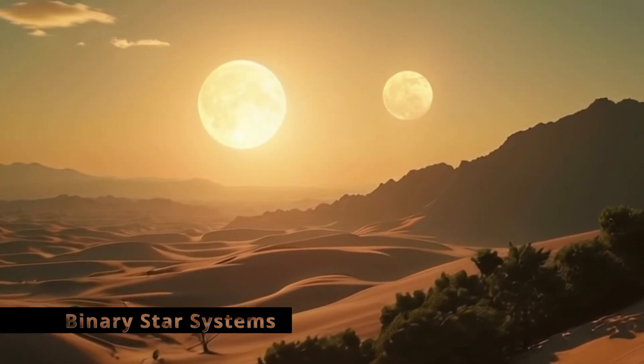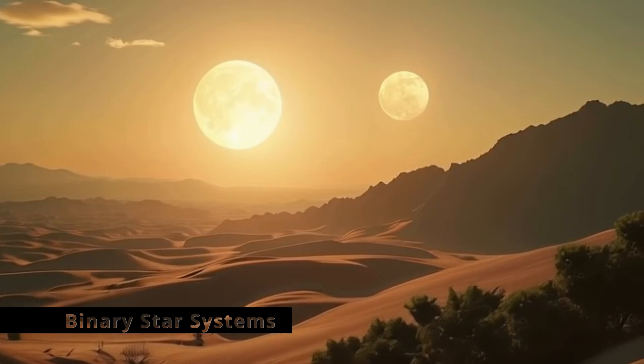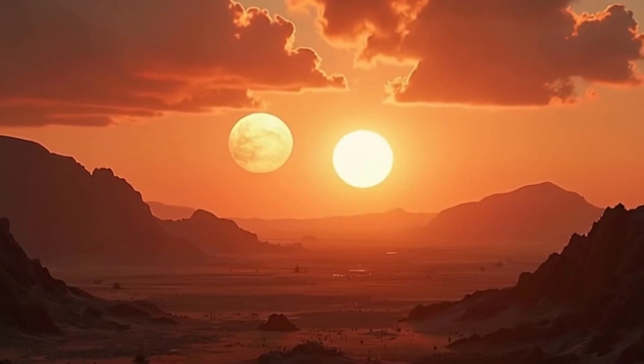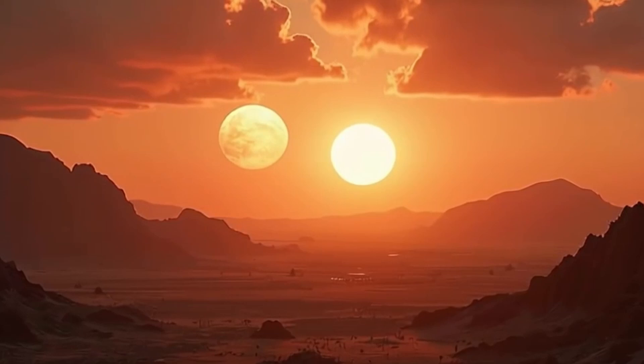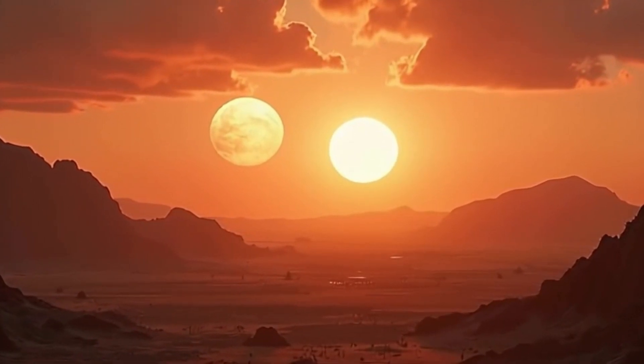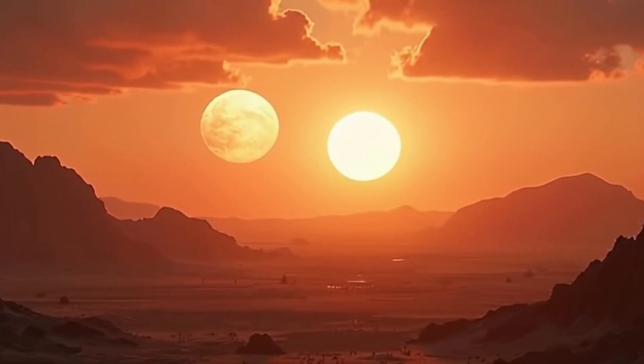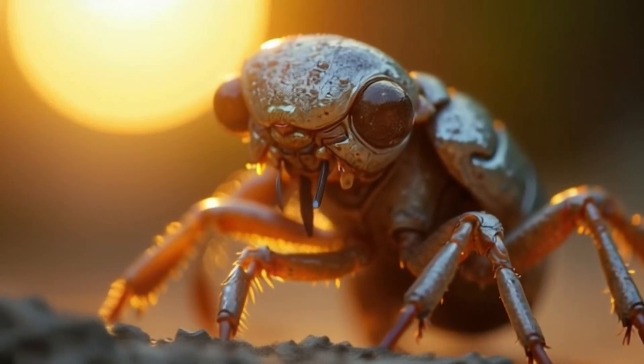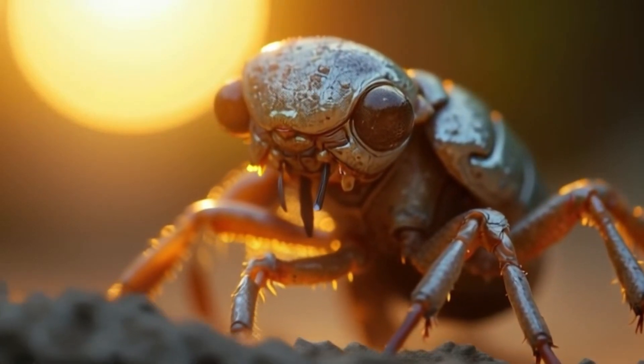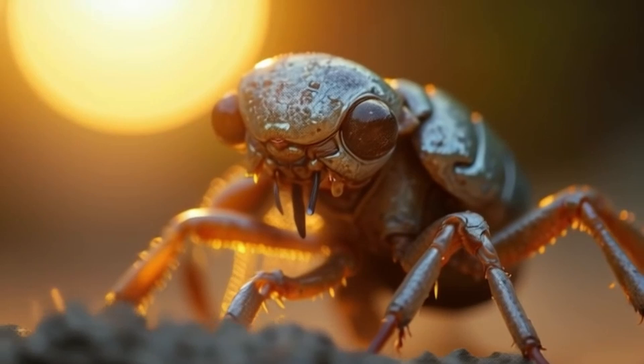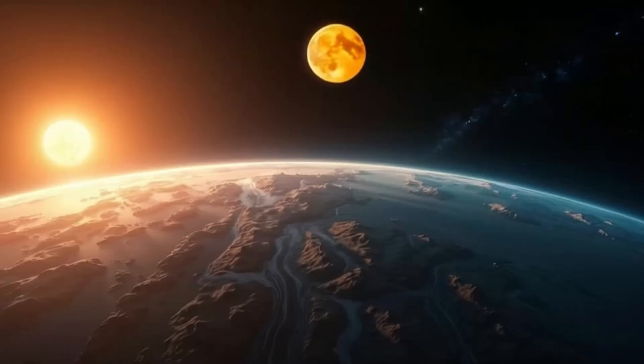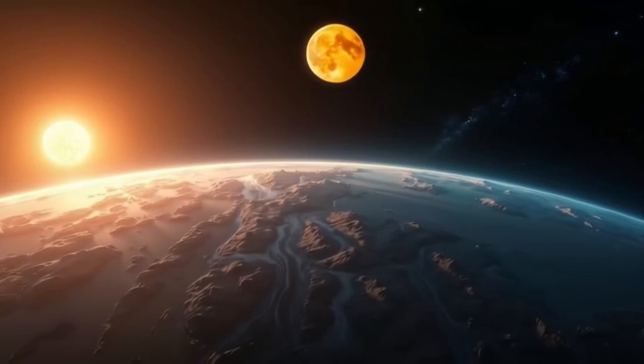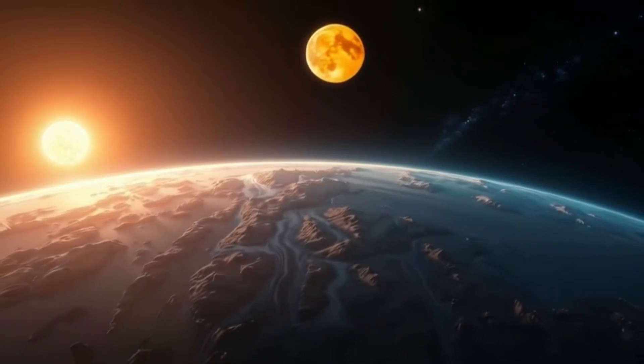In binary star systems, two suns light up the sky, casting unpredictable shadows and creating patterns of radiation. With two suns, these planets experience intense daylight and temperature fluctuations, challenging life to adapt. The heightened radiation levels push organisms to develop protective adaptations, such as reflective surfaces. Longer days and nights create a rhythm of alternating light and darkness, dictating the behavior of life.